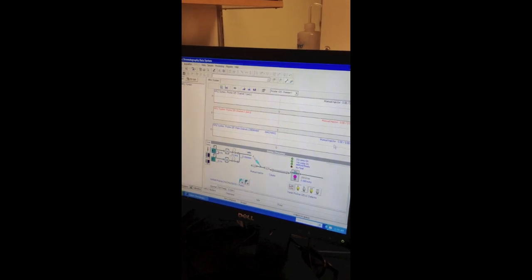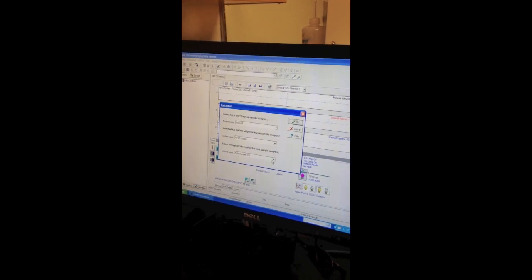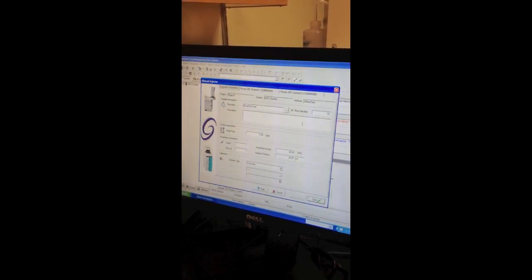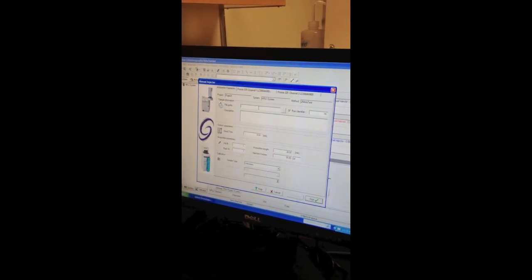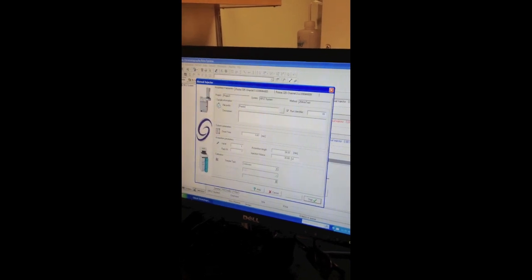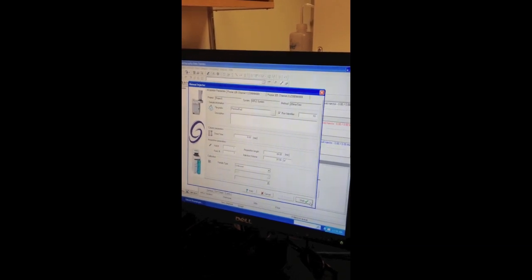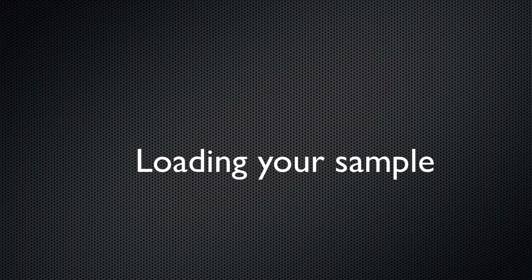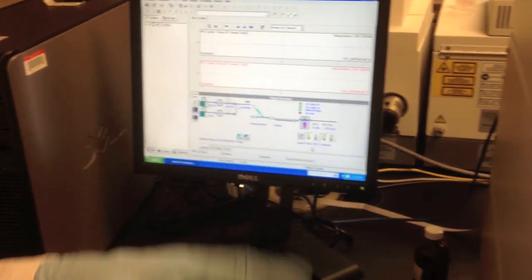So sending the method over. Go to Acquisition, the dropdown. Click Quick Start. Choose your method name. Click OK. Change the file prefix to whatever it is, the sample that you're running. So once you've pressed start, it's going to send over the method and it's going to start. The machine is actually going to start pumping.